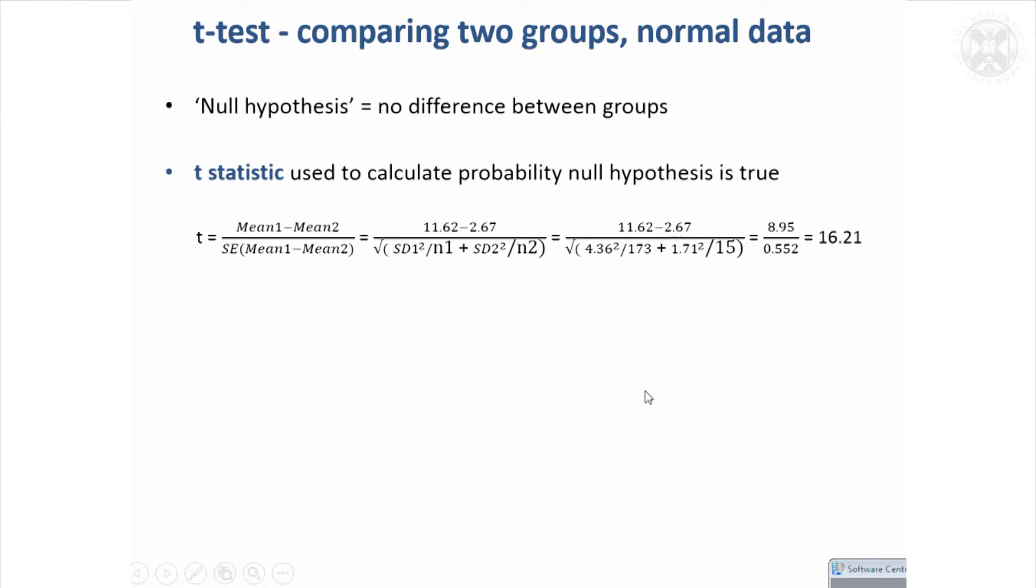So if we assume that the data are normally distributed, I'll first look at something that's probably about the most commonly used test in statistics known as the t-test. This is a test that assumes that the data are normally distributed within each group and it's designed to compare two groups to see if there's a difference between them. So the null hypothesis, no difference between groups.